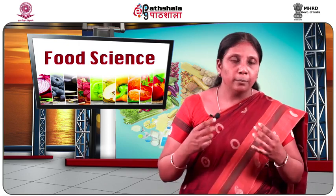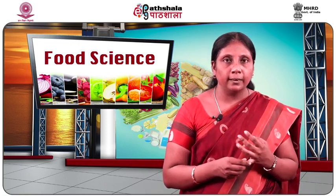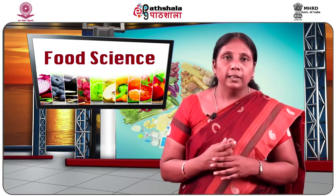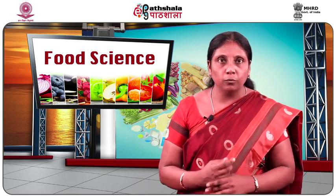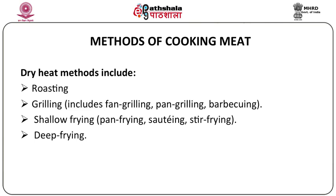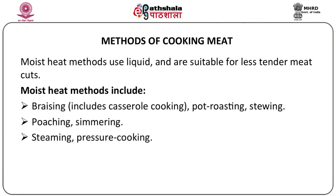We have now looked into the three methods of heat transfer — conduction, convection, and radiation. Moving on to the different dry heat methods of cooking meat: dry heat methods use either oil or air as a medium of cooking, with absolutely no water or steam involved. The different dry heat methods are roasting, grilling, shallow frying, and deep frying. The moist heat methods use liquid in the form of water or steam and are more suitable for cooking the less tender cuts of meat which have more connective tissue. The moist heat methods are braising, which includes casserole and pot roasting, stewing, poaching, simmering, steaming, and pressure cooking.